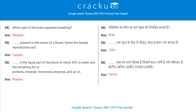Which part of the brain regulates breathing? Medulla. Dash present in the centre of a flower forms the female reproductive part — Carpels. Dash is the liquid part of the blood, of which 92% is water and the remaining 8% is proteins, minerals, hormones, enzymes and so on — Plasma.